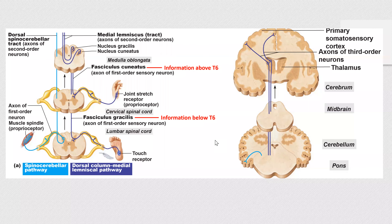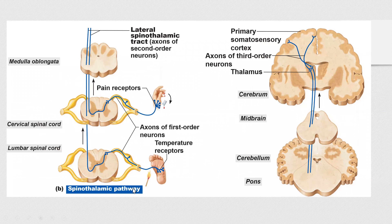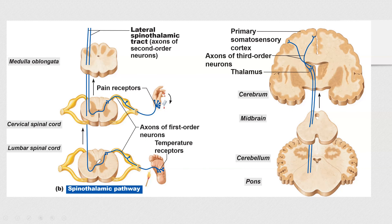Next we can see the spinothalamic tract — about temperature and pain. Similar to the dorsal white column medial lemniscus pathway, you have receptors in your skin. The signal moves through the dorsal root to the dorsal horn, but here it synapses with the second-order neuron right away. The second-order neuron decussates not in the medulla but at the spinal cord level, then moves toward the medulla and up to the thalamus, and from the thalamus to the cortex.